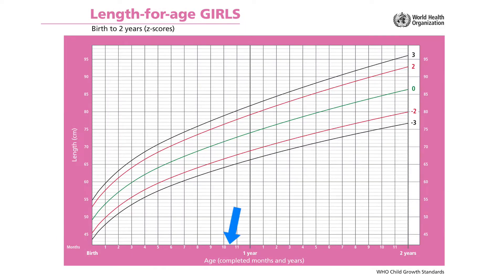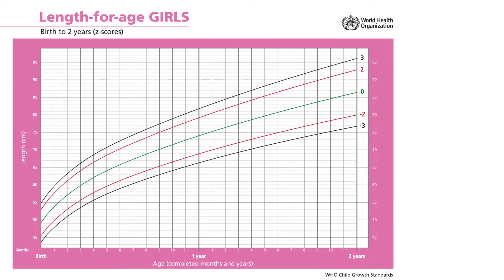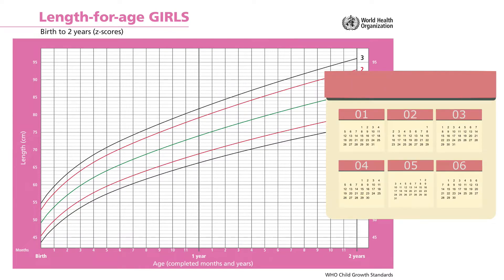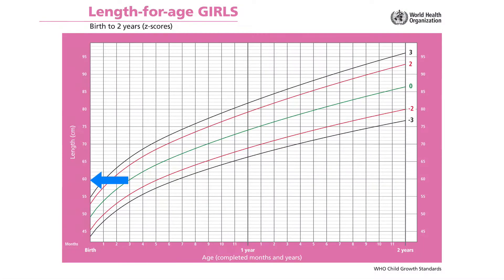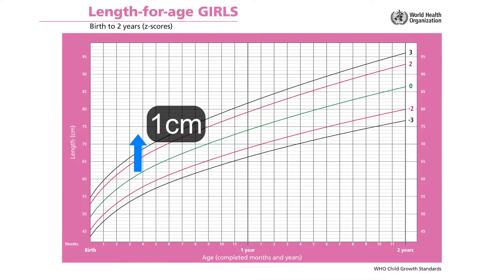In these charts, the horizontal reference line at the bottom is the x-axis, which shows age. Exact age is plotted in weeks and months from birth until 2 years of age. The vertical reference line on the left side is the y-axis, which shows length in centimetres. The thin grey horizontal lines represent an increase in length by 1 centimetre.